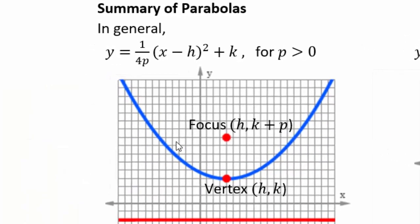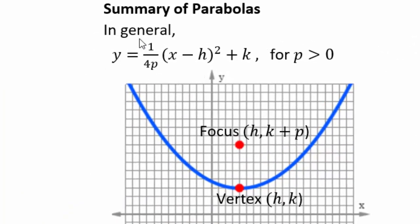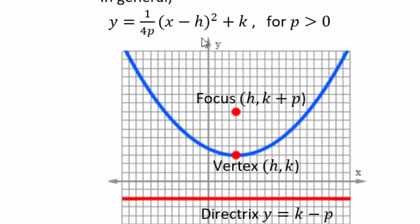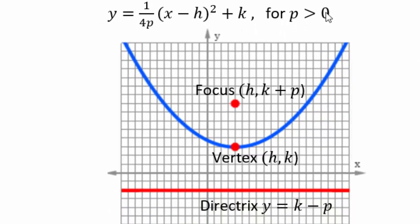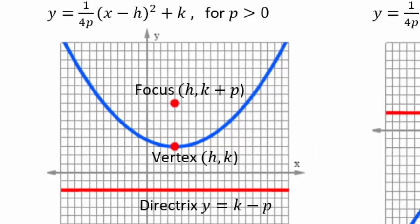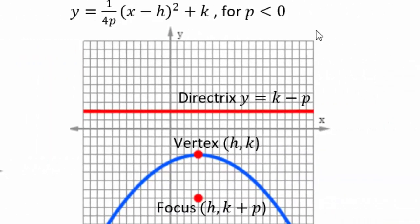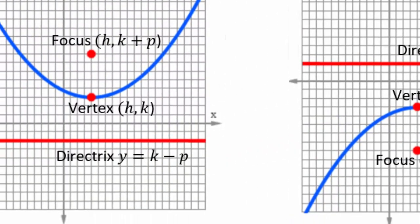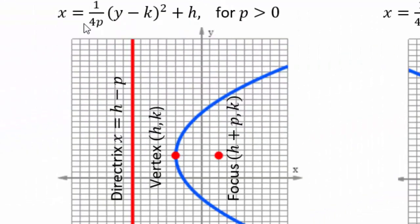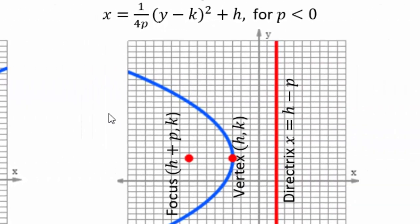Here's the summary: for y = (1/4p)(x−h)² + k, p positive means the parabola faces up, p negative means it faces down. For x = (1/4p)(y−k)² + h, p positive means the parabola faces right, and p negative means the parabola faces left.